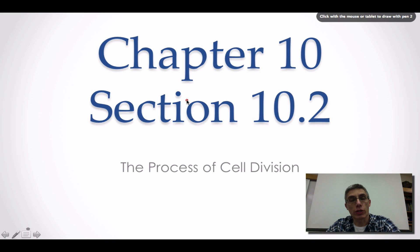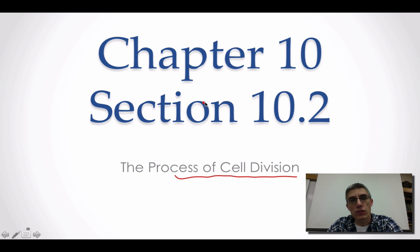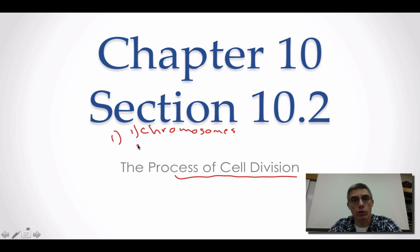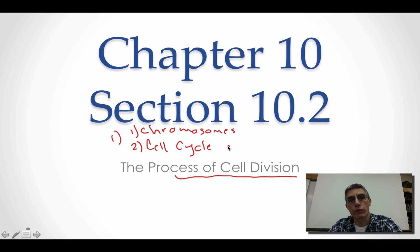Welcome back. This is screencast number two for chapter 10. In section 10.2, we are going to be looking more closely at the process of cell division. Because there's so much information in section 10.2, we're going to break this down into two separate screencasts. In this screencast, we're going to look at chromosomes — specifically the difference between prokaryotic and eukaryotic chromosomes — and also the cell cycle, comparing prokaryotic and eukaryotic cells.